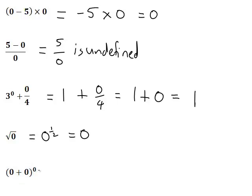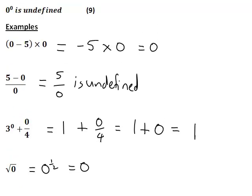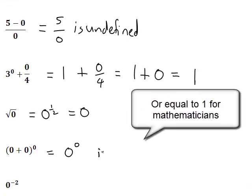Next example: what about (0 plus 0) to the power of 0? We need to work out the brackets first. 0 plus 0 is just 0 by rule 1 — any number including 0, you add 0 and you just get the number. So that is 0 to the 0. We saw that any non-zero number to the power of 0 was 1, and 0 to the power of any positive number was 0. So what happens with 0 to the power of 0? By property 9, that is actually undefined.